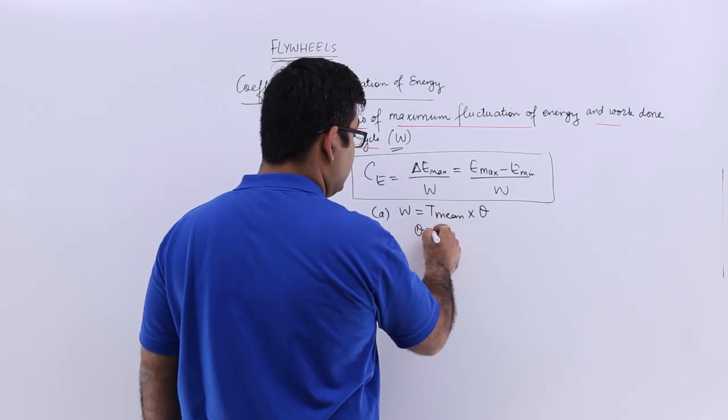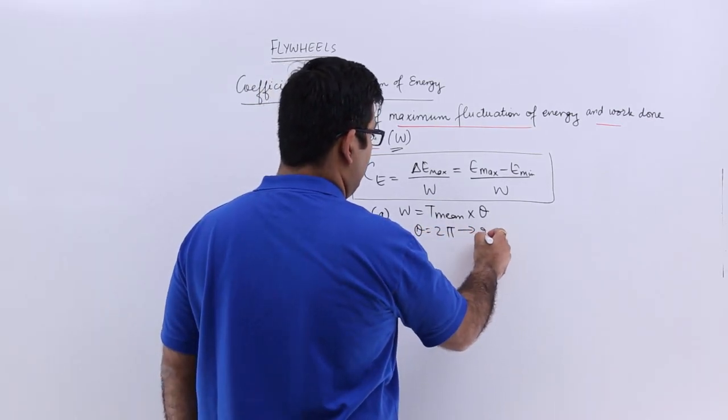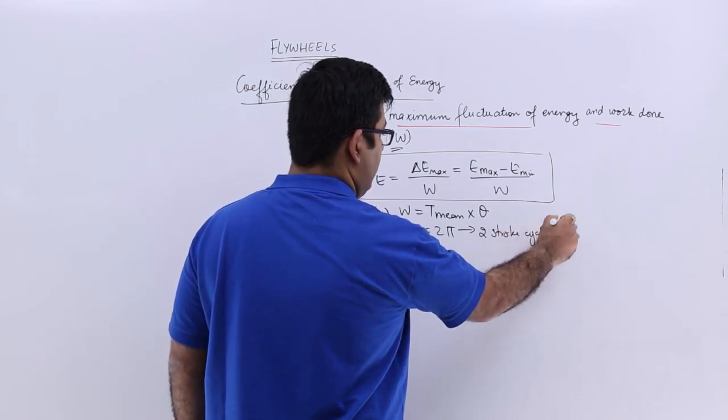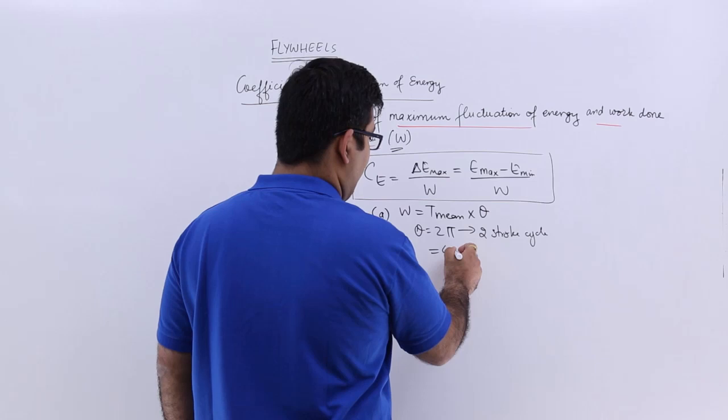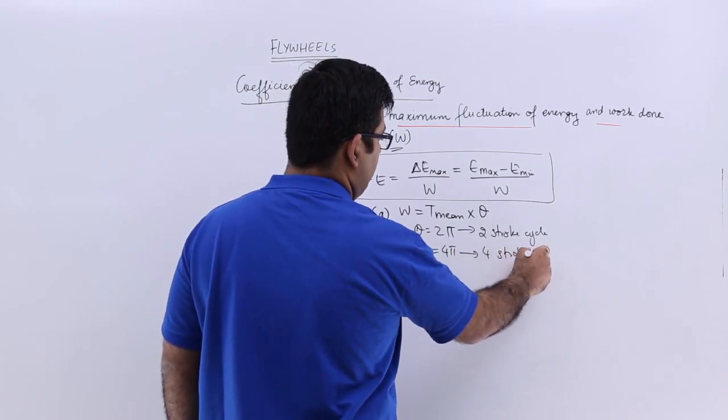So theta, this is equal to 2π if we talk about 2-stroke cycles, and this is equal to 4π if we talk about 4-stroke cycle.